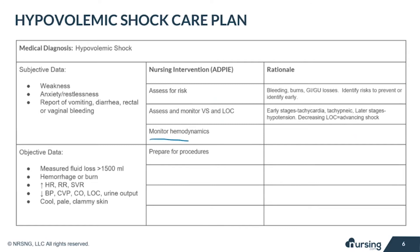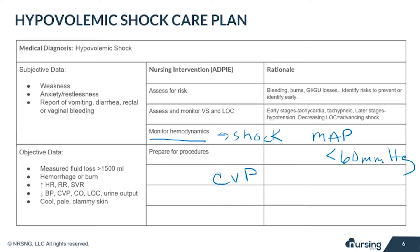Monitoring hemodynamics is important to identify the severity of the shock and how well the patient is responding to treatment. Measurements should include mean arterial pressure, or MAP, which is the average pressure within the arteries. A MAP decreasing below 60 millimeters of mercury indicates decompensating shock. Central venous pressure measures the preload, which will be less than four millimeters of mercury in a patient with hypovolemic shock.